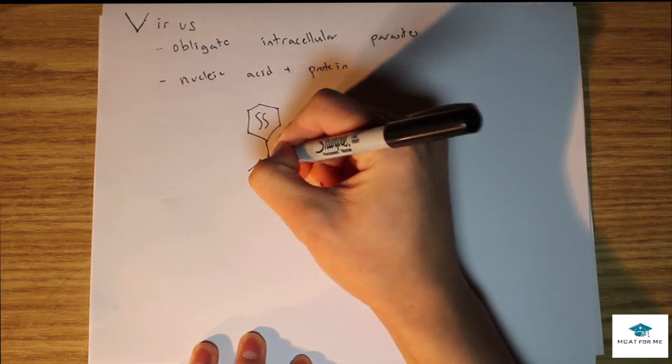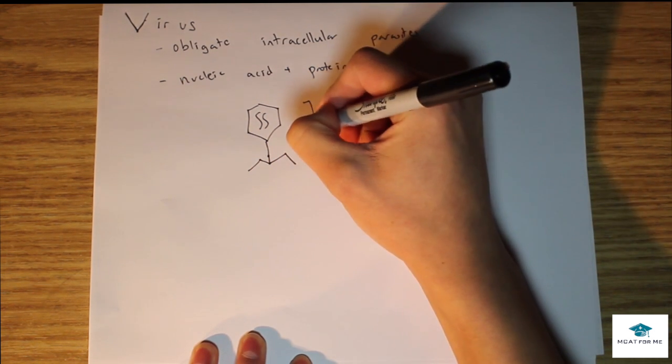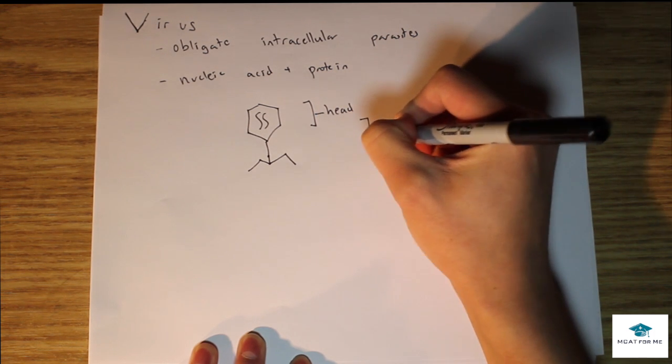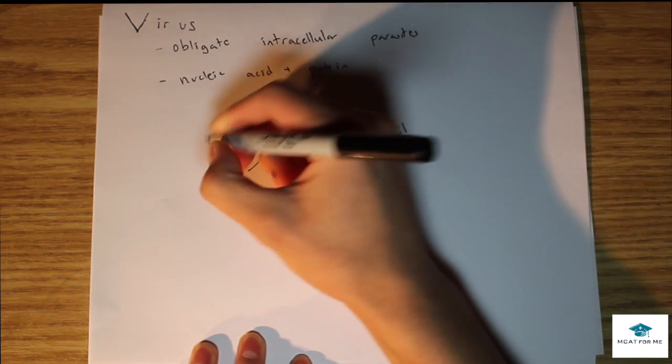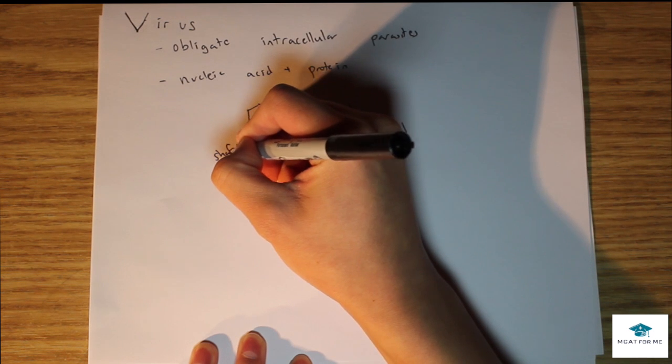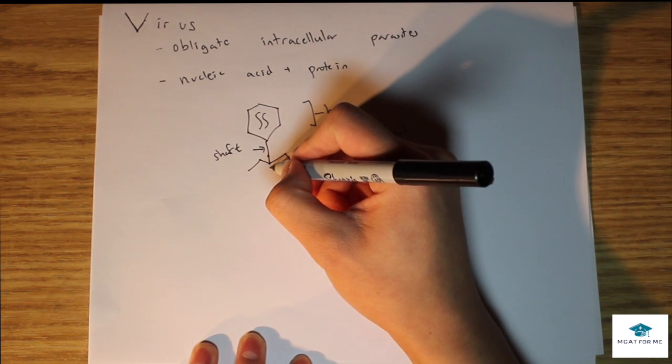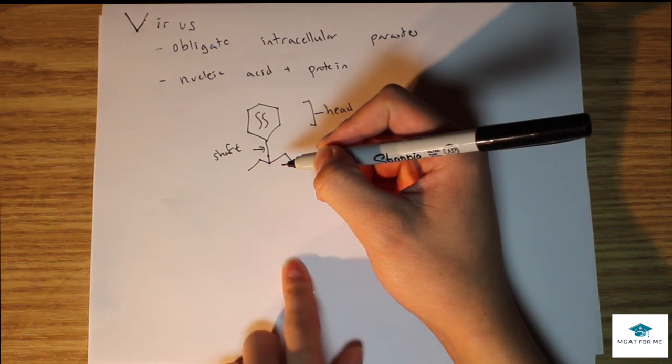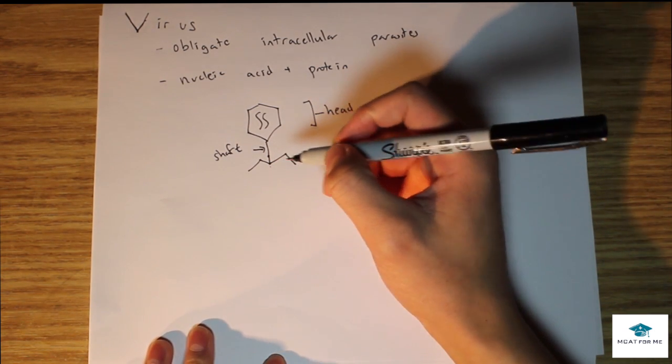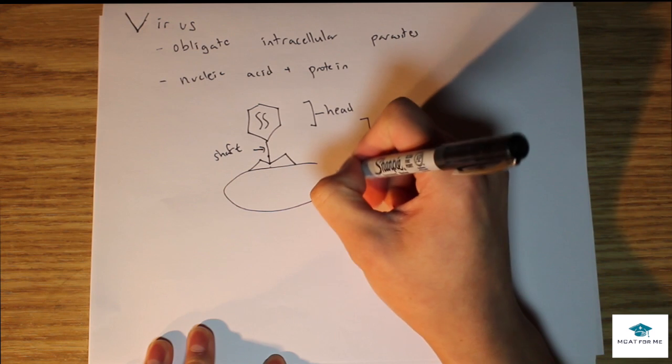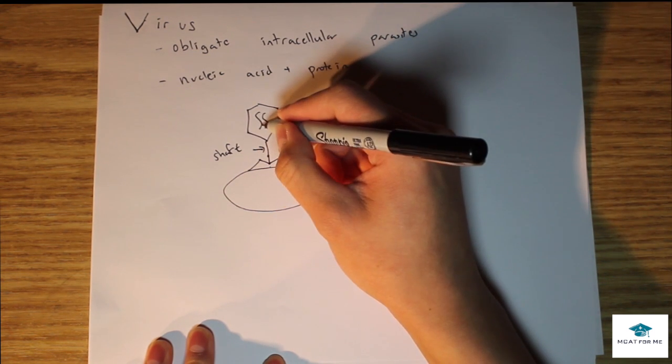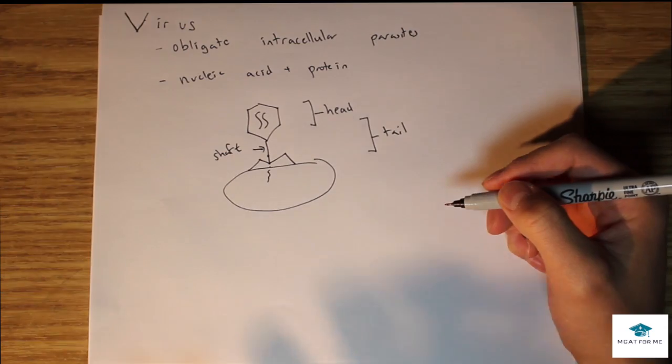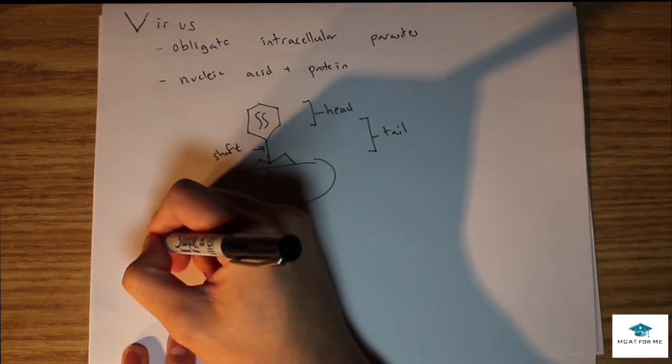This top part's the head and this whole bottom part's the tail. This right here is considered the shaft and this is actually where the nucleotides are injected into the cell. If we can imagine if we had some cell right here, the nucleotides will go through and go into the cell like that.